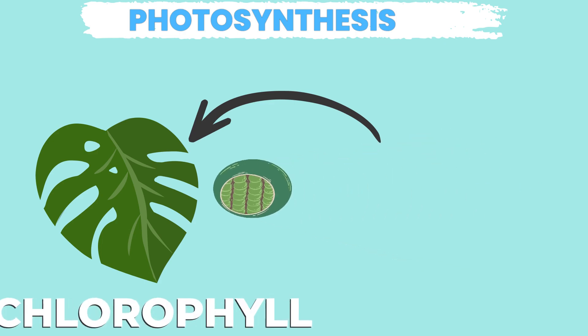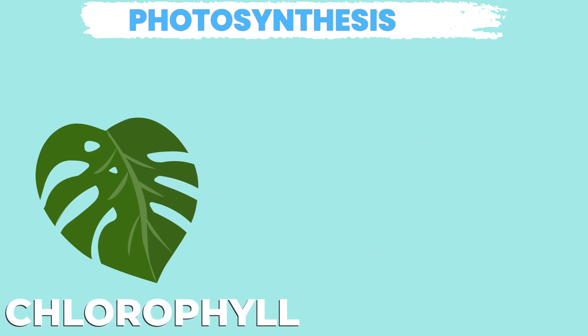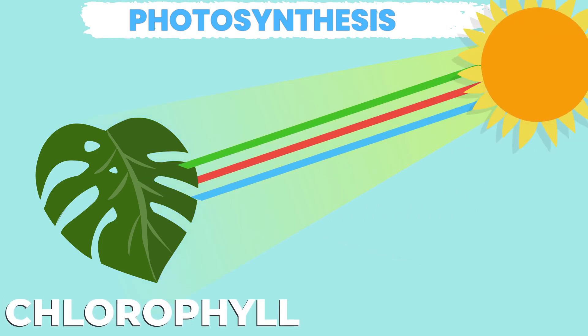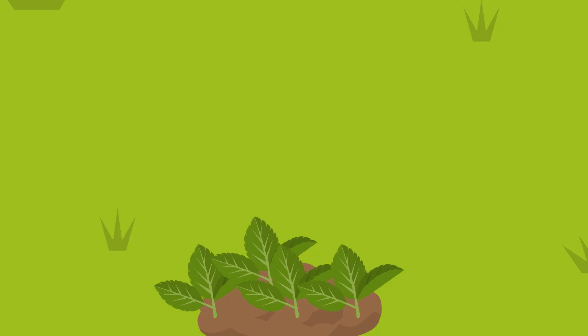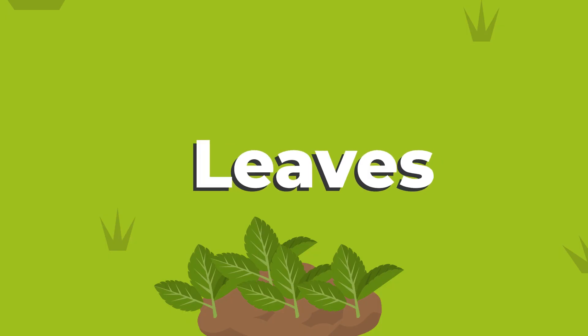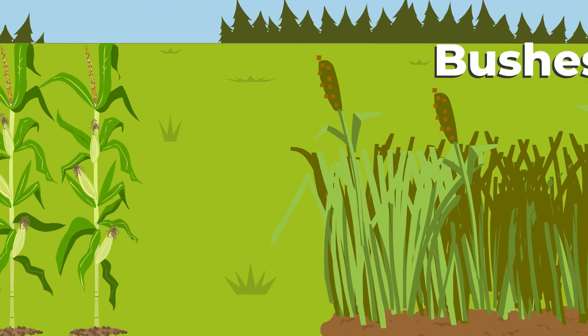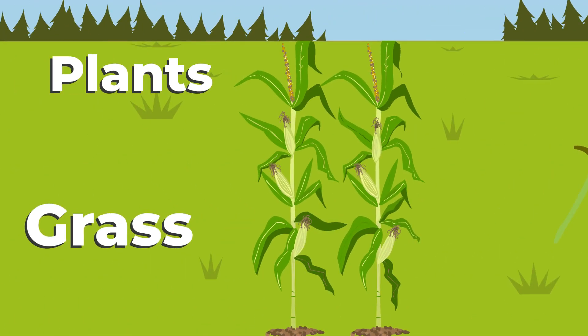Chloroplast is filled with the green pigment called chlorophyll that absorbs red and blue light coming from the sun and reflects green light. That is why leaves, bushes, plants, and grass all appear to be green.